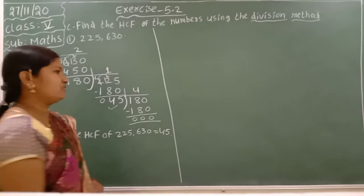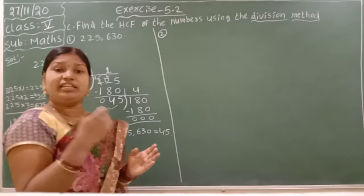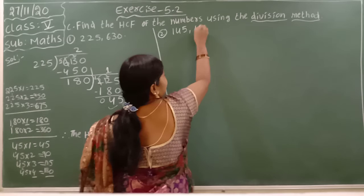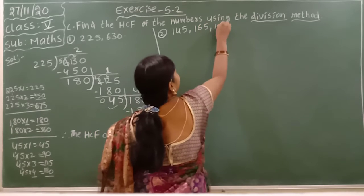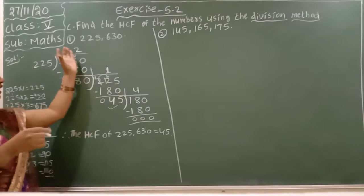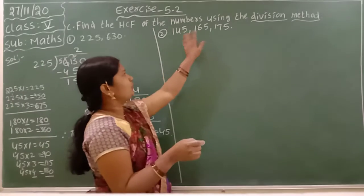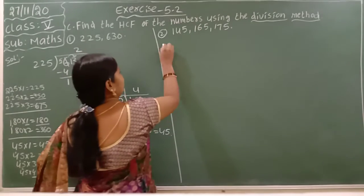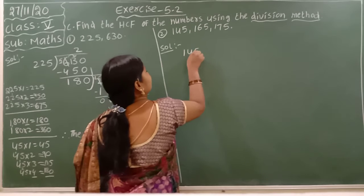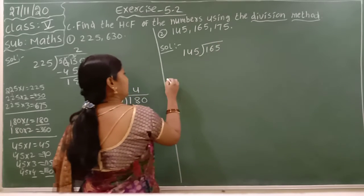Same like this, next question. That is the second question. Here they given 3 numbers: 145, 165, 175. If 2 numbers given, we are doing like this. If they given 3 numbers, first you have to do this 2 numbers division. Solution: 145, 165.